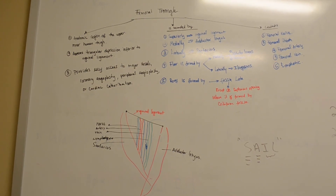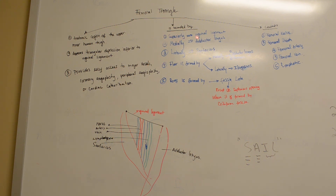The femoral triangle is an anatomic region of the upper inner human thigh. It appears as a triangular depression inferior to the inguinal ligaments and provides easy access to the major vessels for coronary angioplasty, peripheral angioplasty, or cardiac catheterization. It is bounded superiorly by the inguinal ligament, medially by the adductor longus, and laterally by the sartorius muscle. The floor is formed medially by the adductor longus and pectineus, and laterally by the iliopsoas. The roof is formed by the fascia lata, except at the saphenous opening where it is formed by the cribriform fascia.